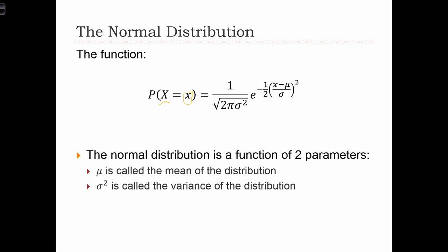The normal distribution, while it's very complicated looking, is just a function of two parameters. Mu is called the mean of the distribution, and sigma squared is the variance of the distribution. These are the two parameters of the distribution.